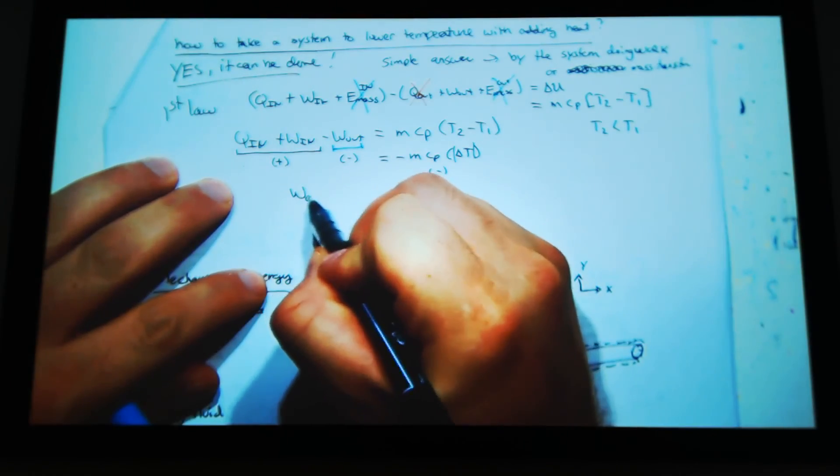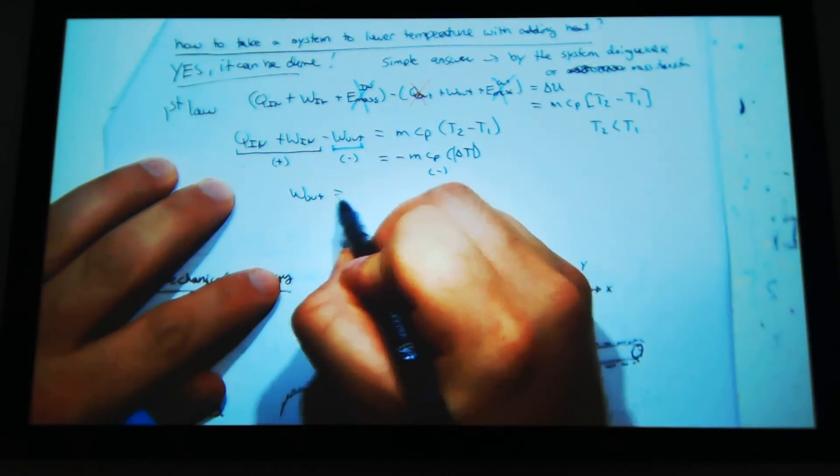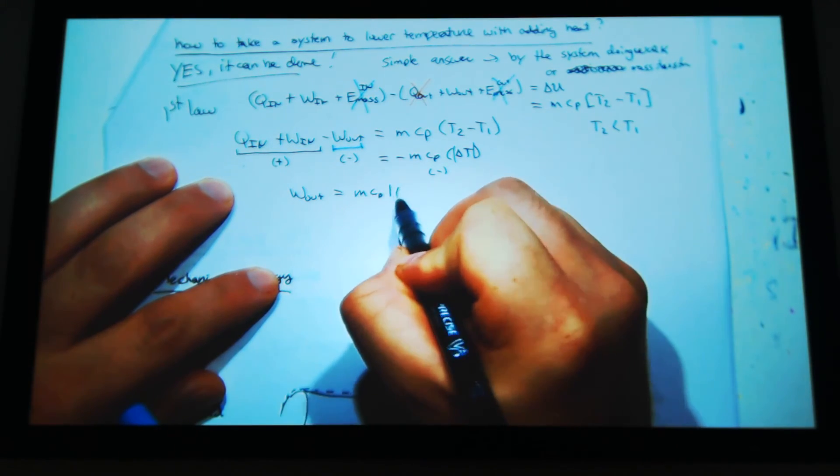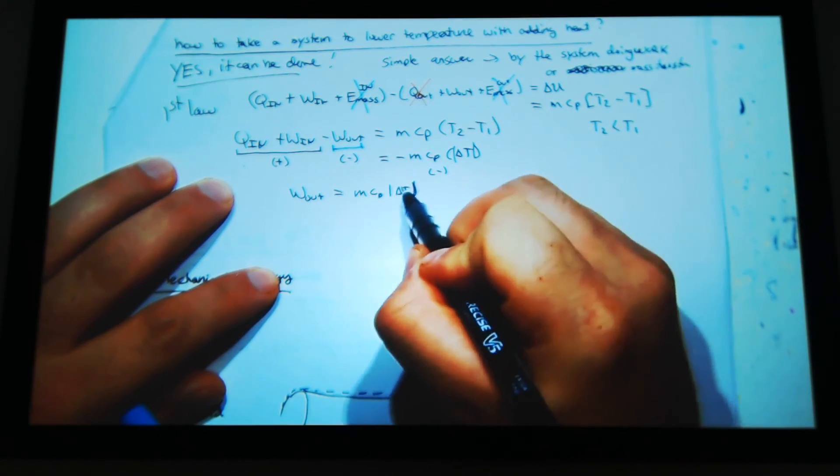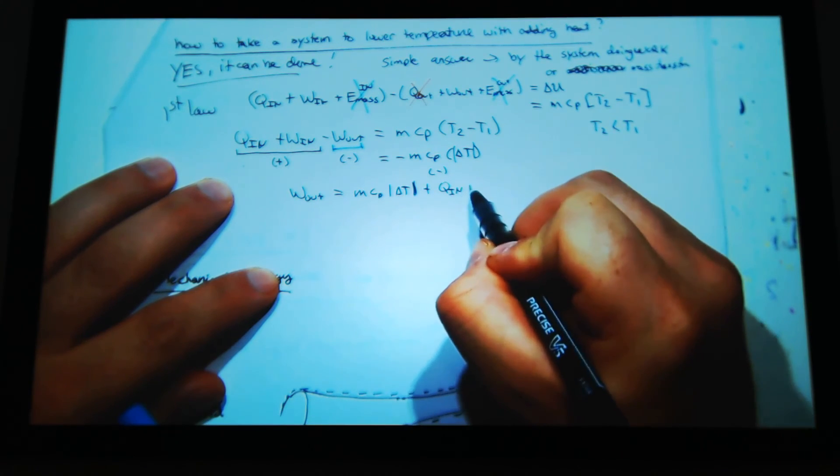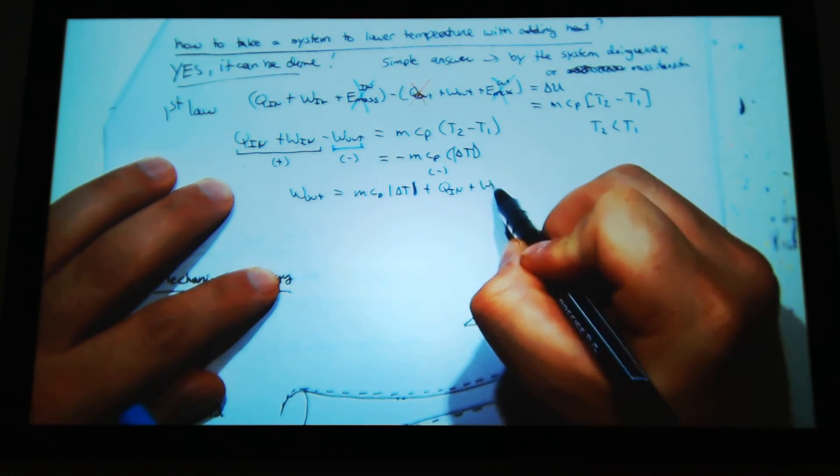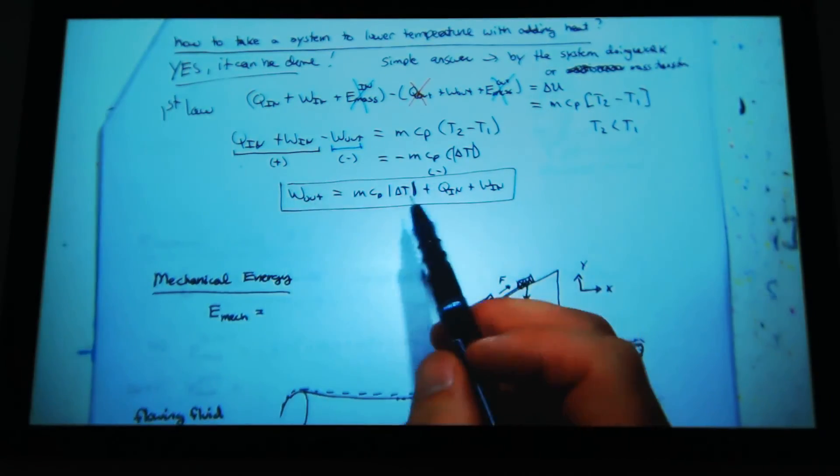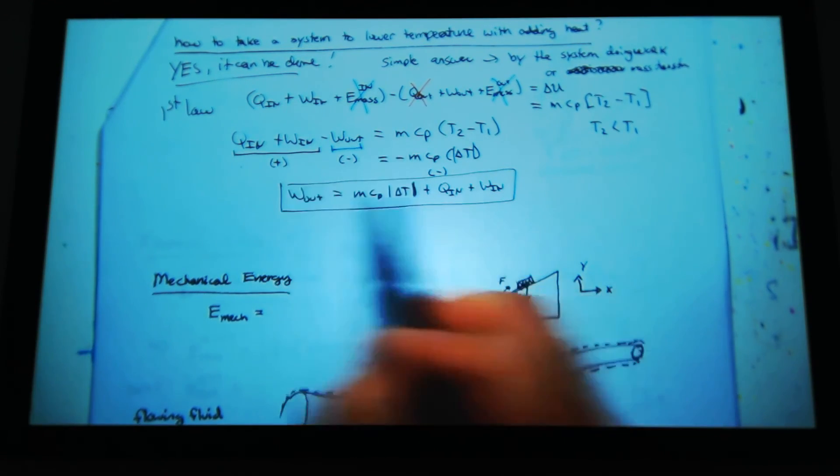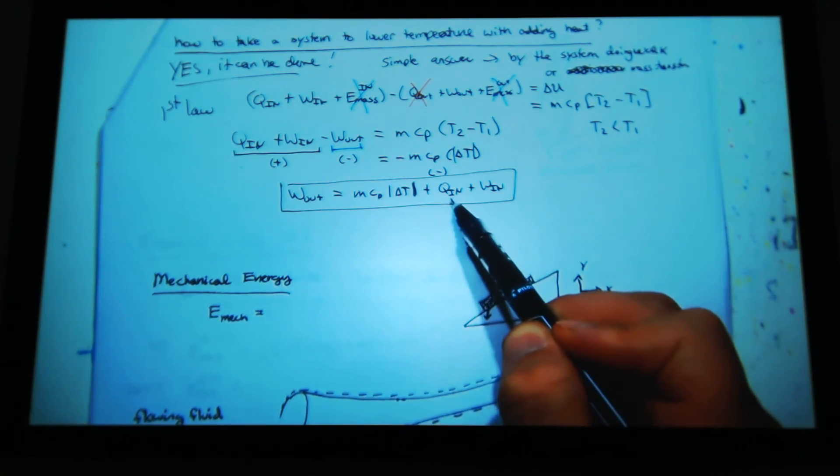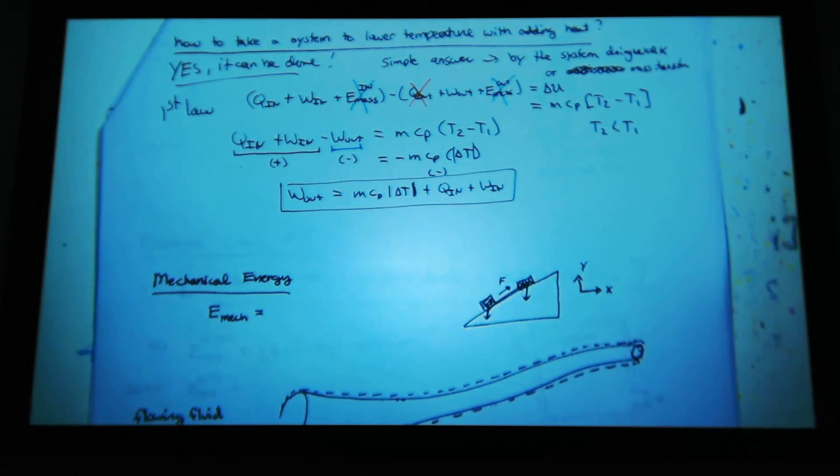So I get work out has to equal M CP magnitude of delta T minus Q in, or plus Q in plus work in. So my work out has to be all of this. The total work out has to equal this change in temperature, decrease in temperature, plus the heat in, plus the work in. So simple answer is I can do this by doing work.